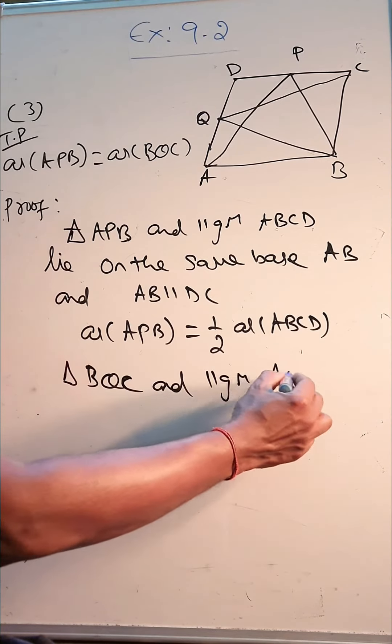So same base and parallel, again same process we'll do. Area of BQC is half the area of ABCD.